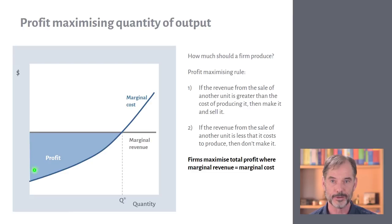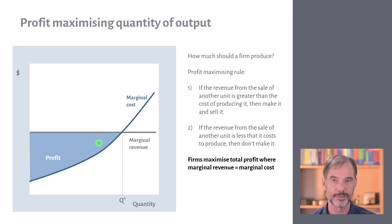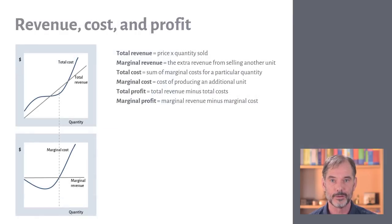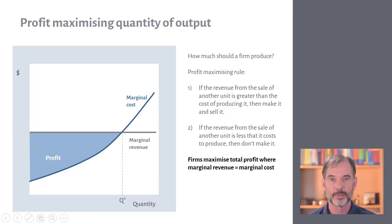Each unit has a different marginal profit — the first unit has a large gap between its cost of production and the sales price, while later units have a smaller gap. Even a unit that barely yields any profit is still worth producing, since any profit is better than none. The profit-maximizing output is therefore as large as possible before cost exceeds revenue, which confirms the MC = MR rule.